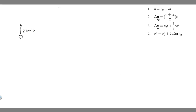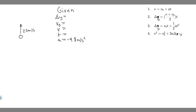So how do we solve these problems? I always start with the given — I write out all the variables: delta y, v sub zero, v, t, and a. The thing about free-fall problems is we assume acceleration is always the force due to gravity, so it's minus 9.8 meters per second squared. It's negative because it's going down — upwards is positive, downwards is negative, just like right is positive and left is negative in horizontal problems.